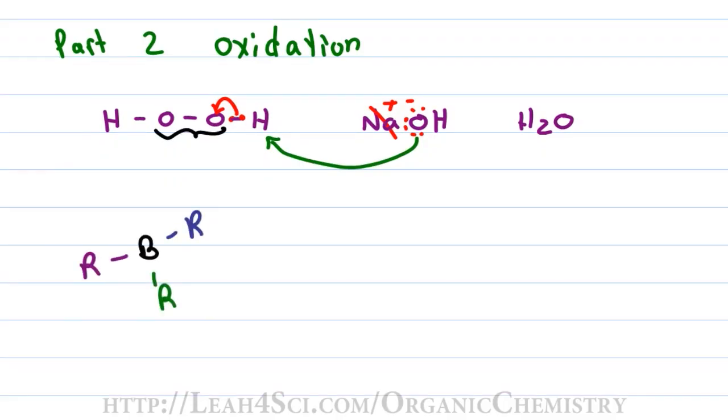Going back to our trialkyl borane, don't forget boron still has that empty p-orbital, and that means it's still reactive and still susceptible to an attack. So we'll show our HOO- anion attacking boron at its empty p-orbital and giving boron a total of four bonds.